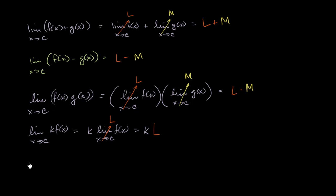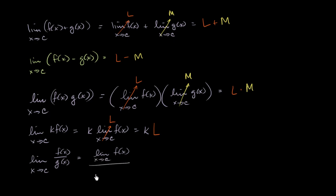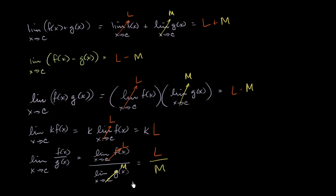If we have the limit as x approaches c of f of x divided by g of x, this is the exact same thing as the limit of f of x as x approaches c divided by the limit of g of x as x approaches c, which is going to be equal to L over M. This is sometimes called the quotient property.